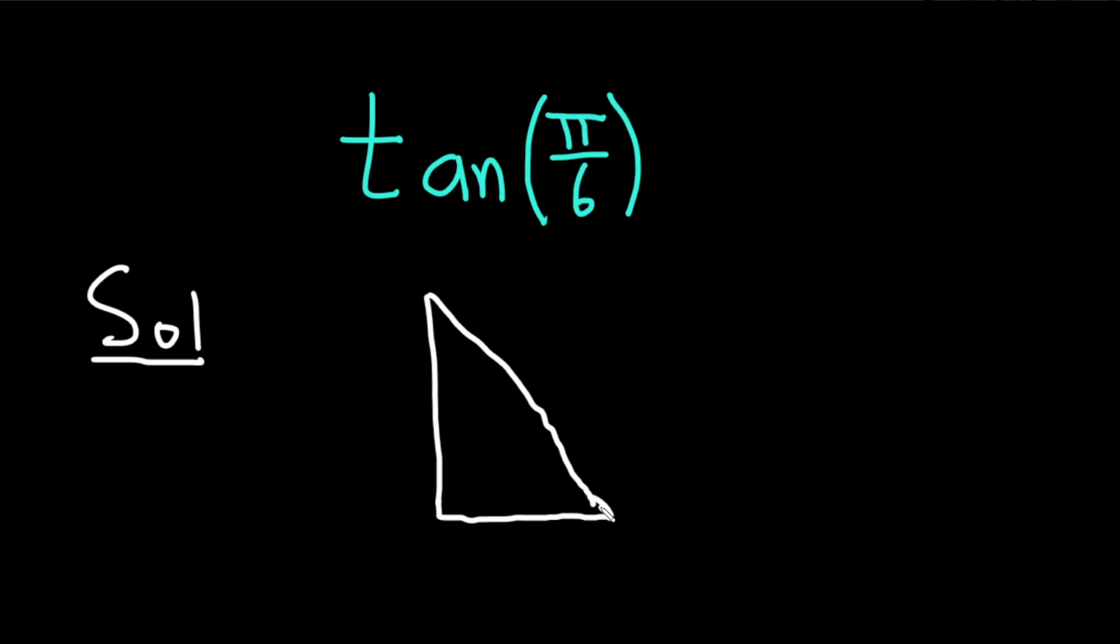So we have a triangle here. This is a right triangle. This angle here is pi over 3, and this angle here is pi over 6. So here we have 1, 2, 3, and then we have a square root.